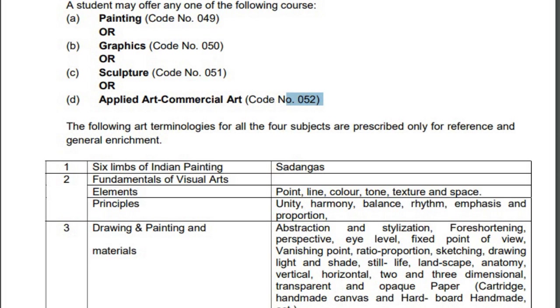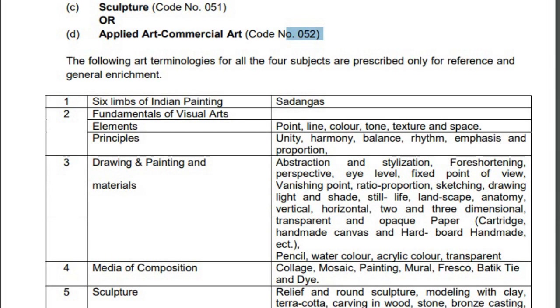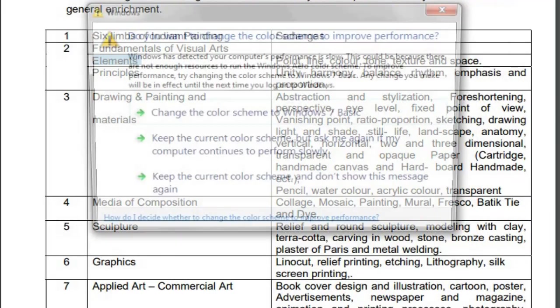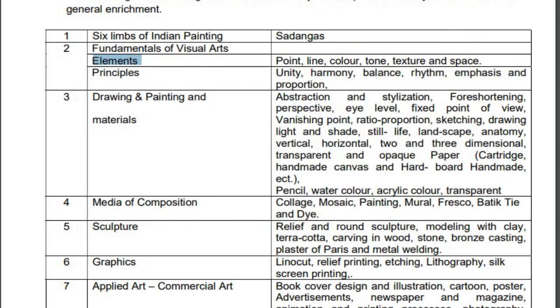In this portion, both the theory part and the practical part are mentioned. First, the six limbs of painting — Shadang — covering both theory and practical. We will learn about the fundamentals of painting, including principles and elements such as line, color, tone, texture, space, unity, harmony, balance, rhythm, emphasis, and proportion.